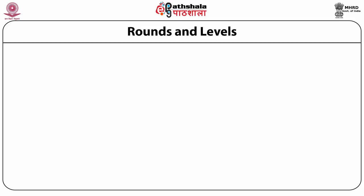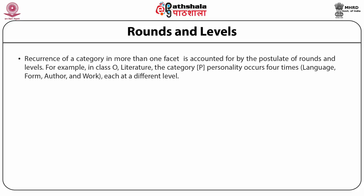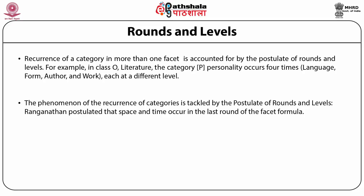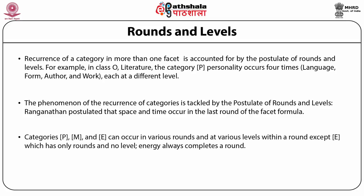After identification of categories, they are put into the formula PMEST. Within PMEST, facets may occur in rounds and levels. Recurrence of a category in more than one facet is accounted for by the postulate of rounds and levels. For example, in class O (literature), the category personality occurs four times: language, form of the document, author, and work or title — each at a different level. Ranganathan postulated that space and time occur in the last round, while personality, matter, and energy can occur in various rounds and levels.